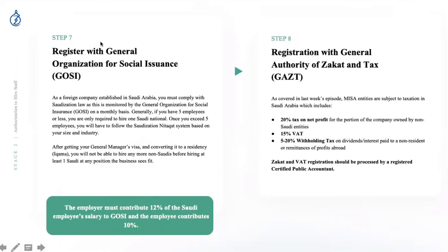Step seven is registering for GOSI — the General Organization for Social Insurance. This is where you register your Saudi national employees. To run a business in Saudi Arabia you must follow Saudization rules: for companies with fewer than five people, you need one Saudi national, and that first employee must be hired within six to twelve months of setup.